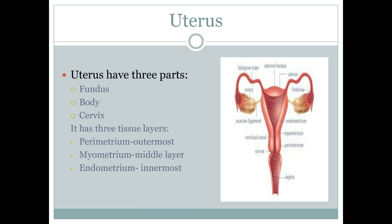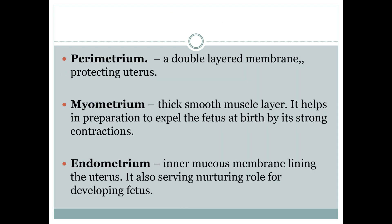Like the fallopian tubes, the uterus is also divided into three parts: the fundus (the head of the uterus), the body of the uterus, and finally the cervix (the end or exit of the uterus). The fundus is situated above the entry point of the uterine tube. The body of the uterus is the usual site for implantation of the blastocyst, and the cervix is the lower part leading to the vagina.